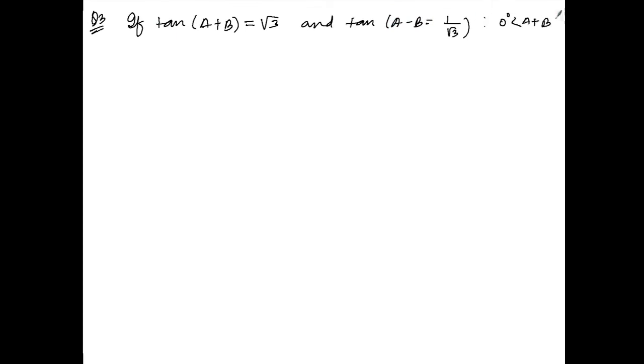We are doing exercise 10.1, question number 3. Let me write down the question. If tan(a+b) is equal to √3, and tan(a-b) is equal to 1/√3, where 0° is less than a+b is less than 90°, and a is greater than b — find a and b.